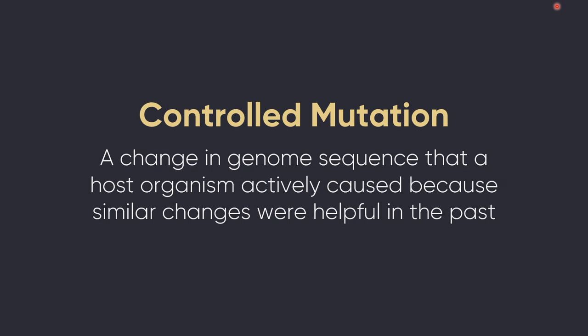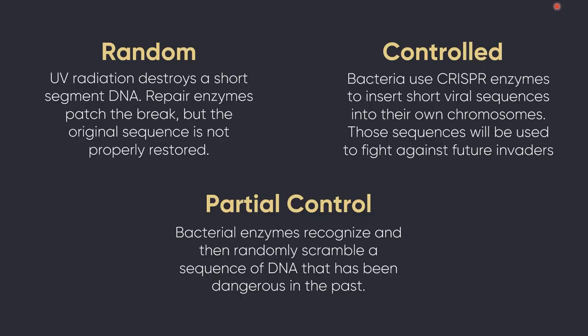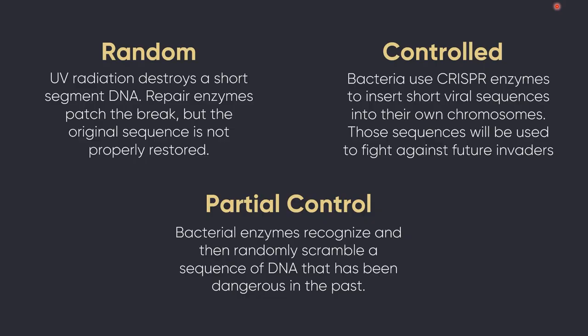Random mutations are in contrast to controlled mutations. A controlled mutation would be a change in genome sequence that a host organism actively caused because similar changes were helpful in the past. A random mutation would be UV radiation destroying a short segment of DNA, then repair enzymes patching that break, but the original sequence not being properly restored. A controlled mutation example: bacteria use CRISPR enzymes to insert short viral sequences into their own chromosomes — those sequences will be used to fight against future virus attacks. And then there's partial control: bacterial enzymes recognize and then randomly scramble sequences of DNA that have been dangerous in the past. There's a really cool paper called 'The Genome Strikes Back' that outlines a bunch of these evolved systems.